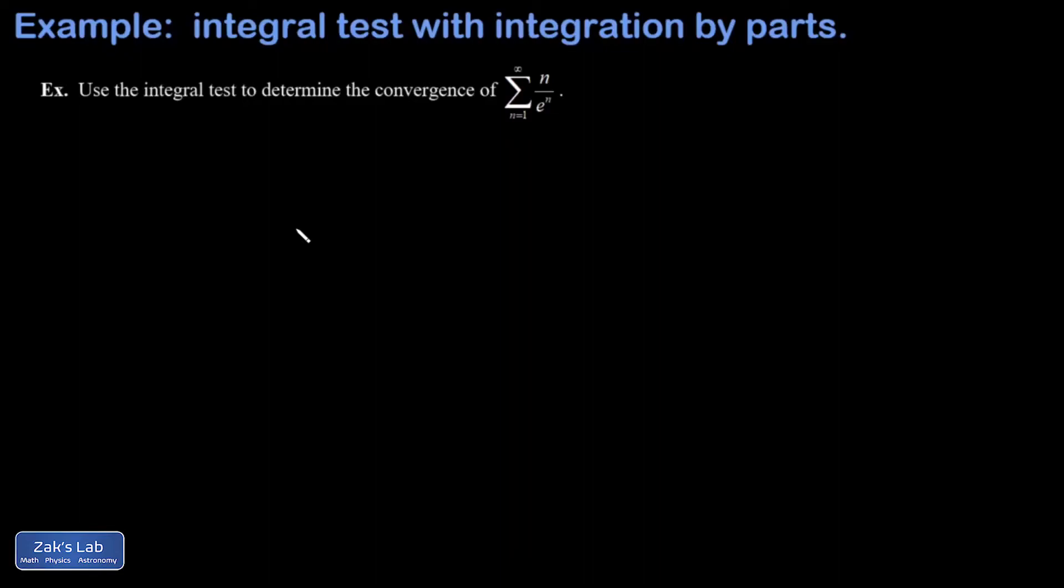In this video we're investigating the convergence of the series n over e to the n summed from one to infinity, and we're asked to use the integral test for this. We've already done this series once before using the ratio test, and I'll post a link to where that was done, but now we're using the integral test.